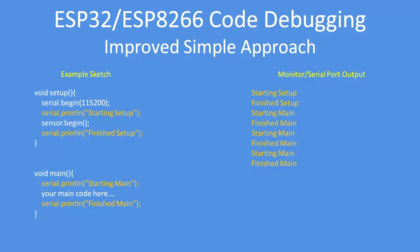As a slightly improved approach, you can actually print out the function names of where you are in the program — so serial print 'starting setup', 'finish setup'. I find this approach quite useful because then I know which function it's in: it started the setup, it finished the setup, it started the main section, it finished the main section. Similarly in any of your sub-functions or subroutines you can do the same, and then you can see the program flowing as expected.